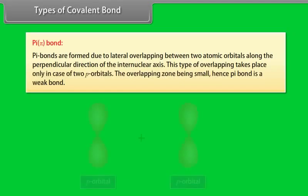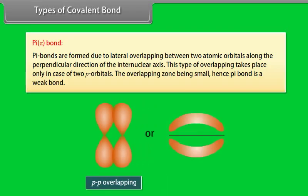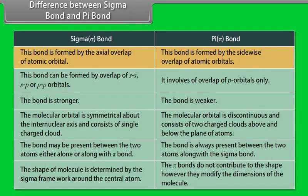Pi bonds are formed due to lateral overlapping between two atomic orbitals along the perpendicular direction of the internuclear axis. This type of overlapping takes place only in the case of two P orbitals. The overlapping zone being small, the Pi bond is a weak bond. Pi bond involves the overlap of P orbitals only, whereas a sigma bond can be formed by S-S, S-P, or P-P orbitals.